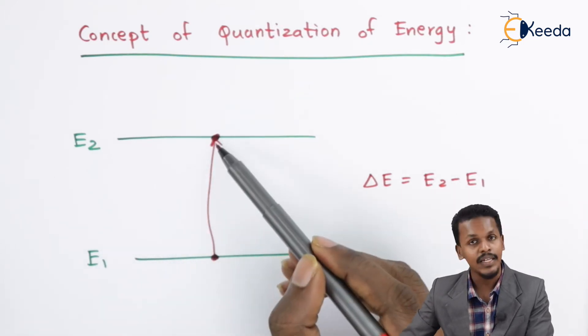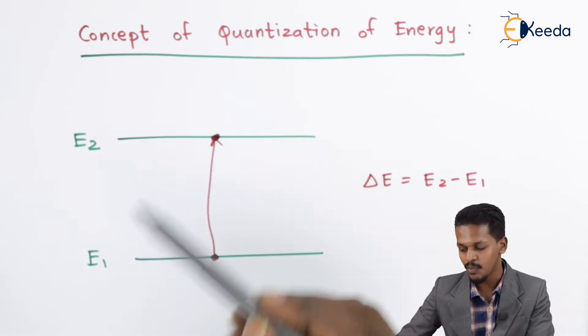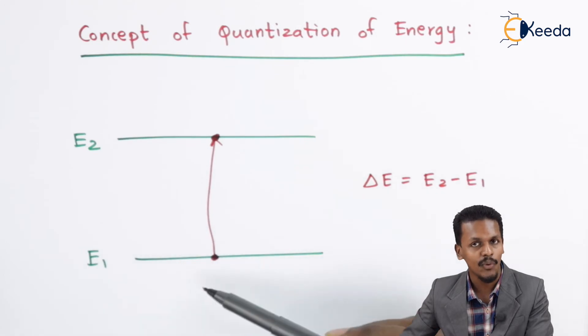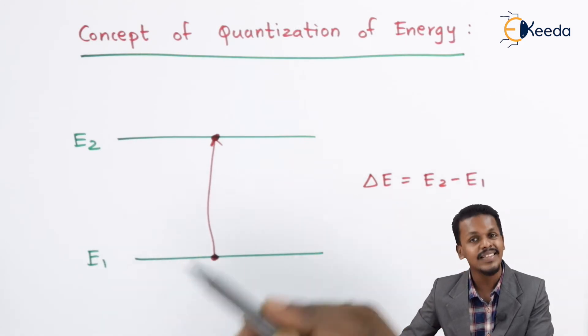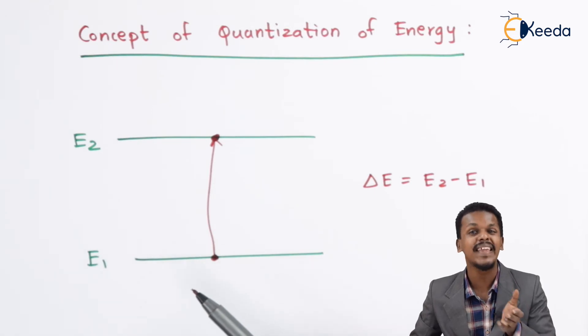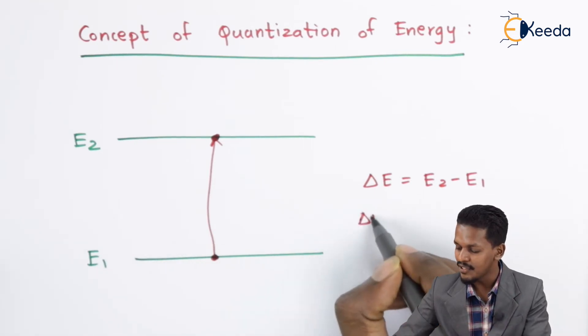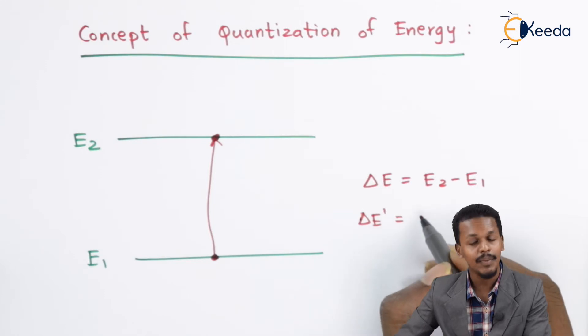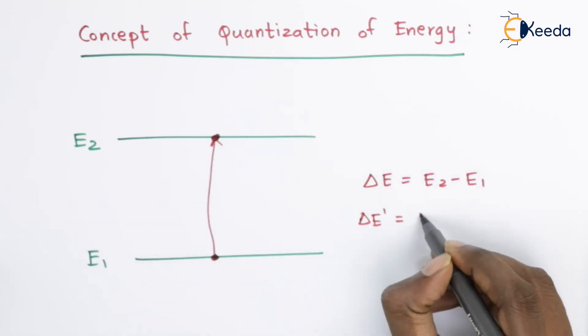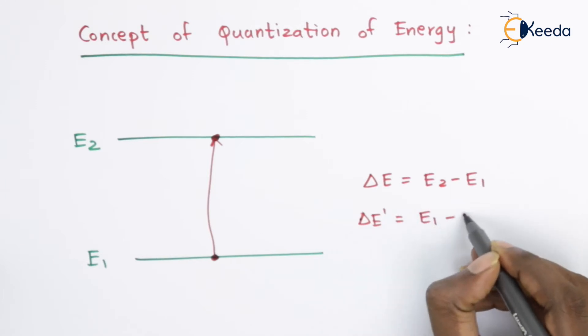But suppose if we have excited the electron and we have to bring the electron down - if the electron jumps down here. What is the energy? It will not be absorbed, it will be emitted. In that case, the delta E dash will be the gap between these two, which is E1 minus E2.